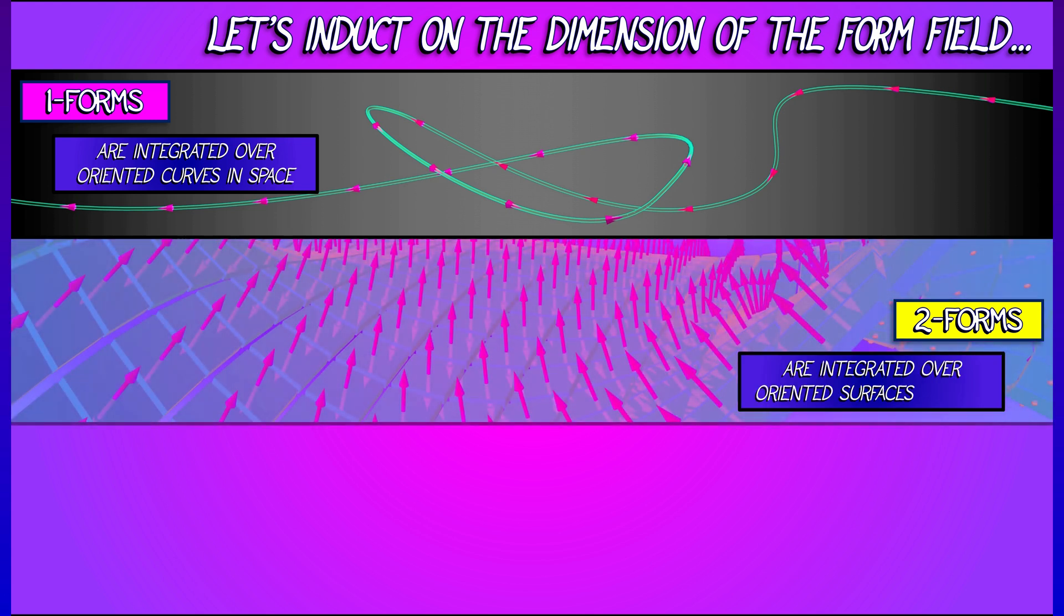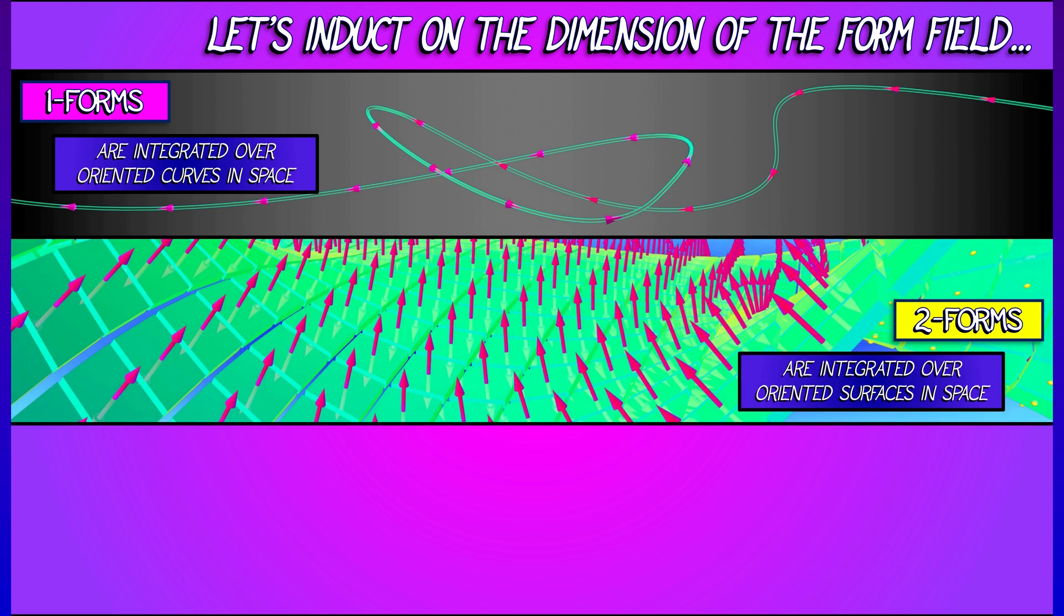Two-forms, on the other hand, eat two tangent vectors. And so we integrated two-form fields over oriented surfaces in space. So now, what do we do with a k-form field?